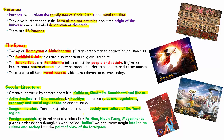Lastly, we have foreign accounts by travelers and scholars who came to India in ancient times, such as Fahien and Xuanzang. Megasthenes, the Greek ambassador, wrote a work called Indica, through which we get a unique insight into Indian culture and society from the perspective of foreigners.